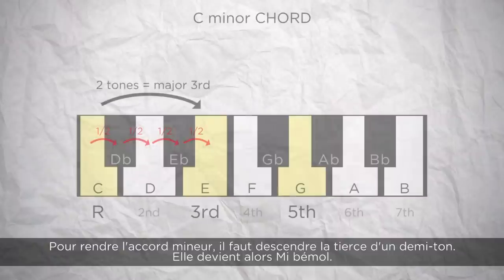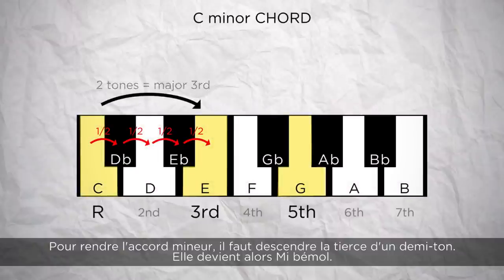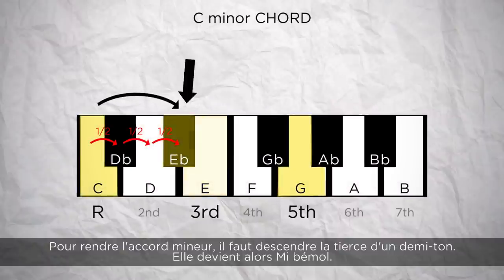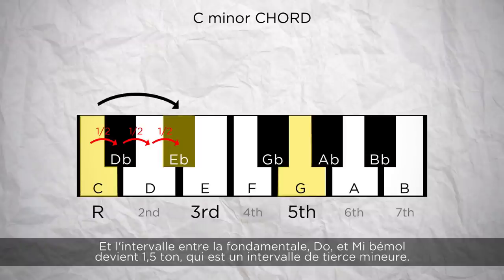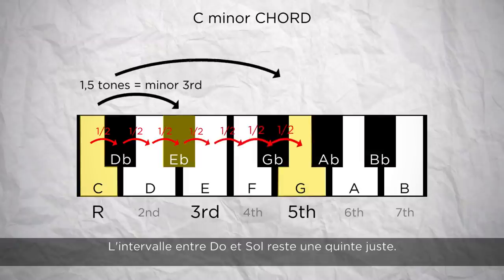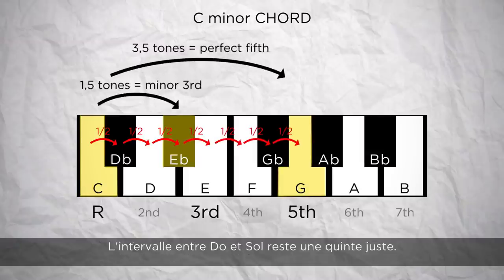To make it a minor chord, I have to lower the third by a semitone, so it becomes E flat. The interval between the root note C and E flat is one tone and a half, which is an interval of a minor third. The interval between C and G is still a perfect fifth.